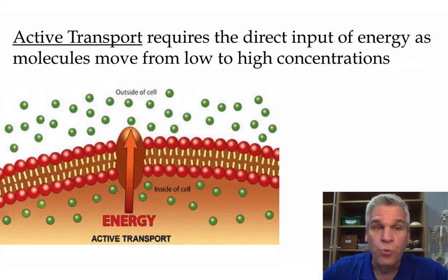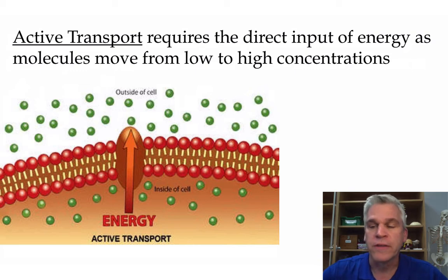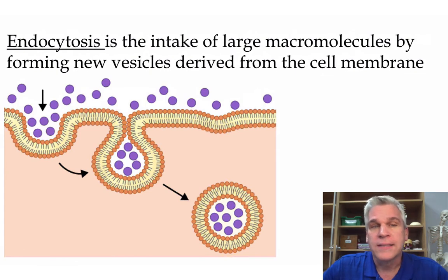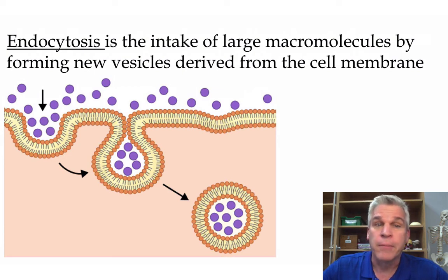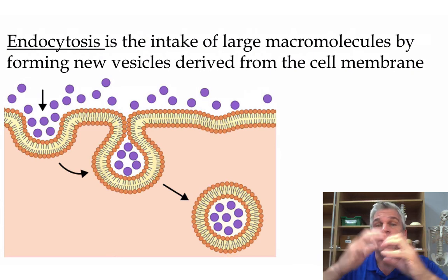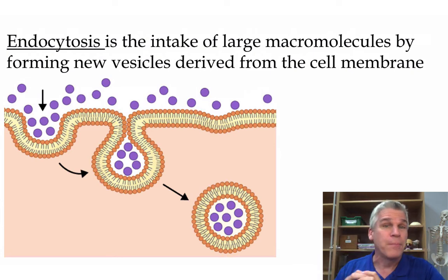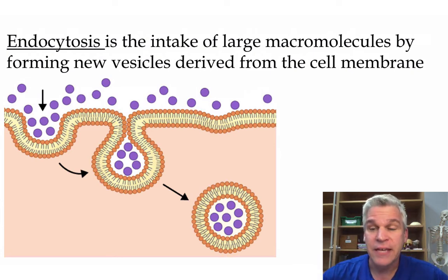Now some molecules are really big and so they can't simply go through one of these transport proteins. The cell has other ways of getting them inside. One process is called endocytosis — this is the intake of large macromolecules by forming new vesicles derived from the cell membrane. The cell membrane simply envelops these larger molecules and brings them inside the cell.